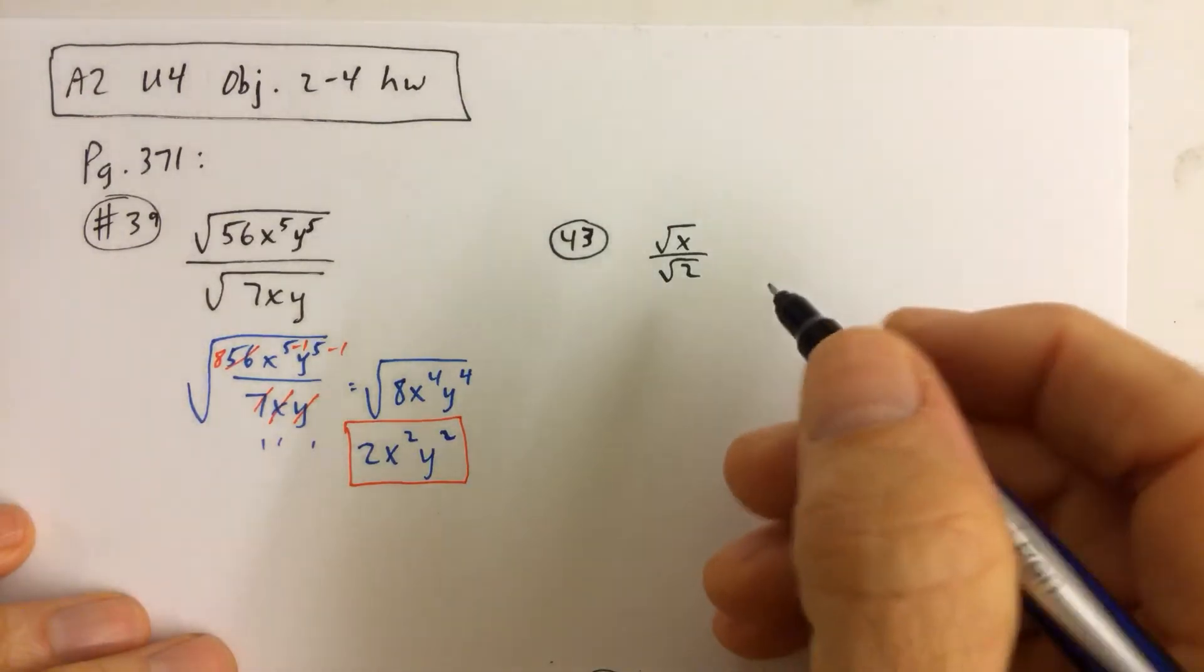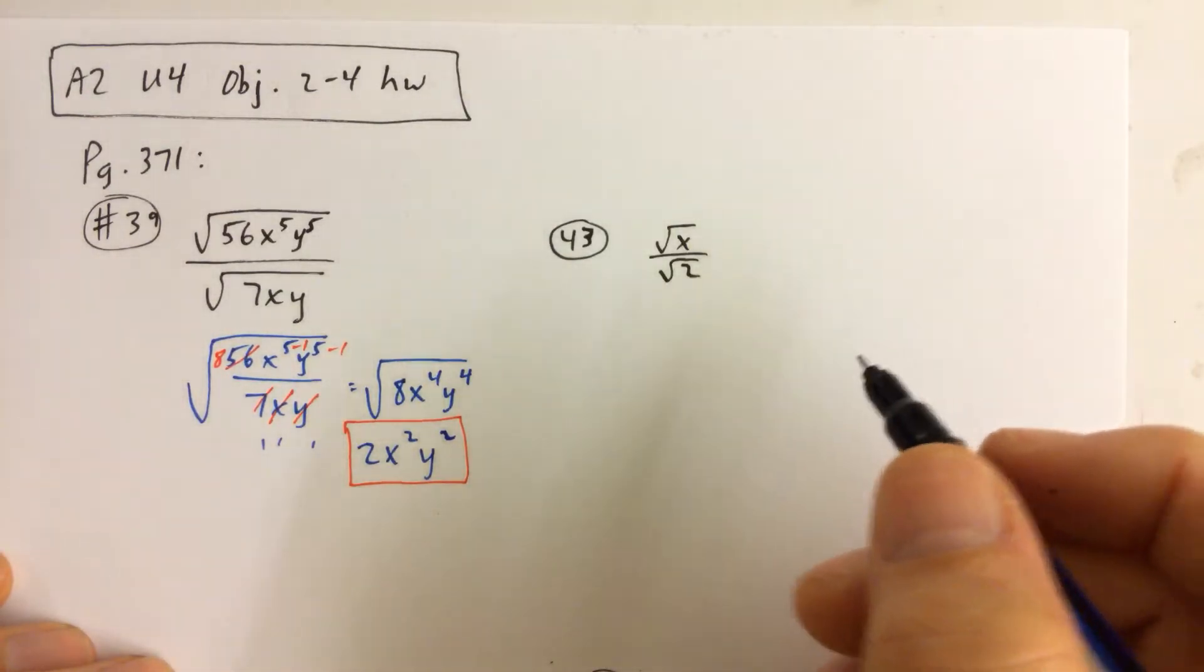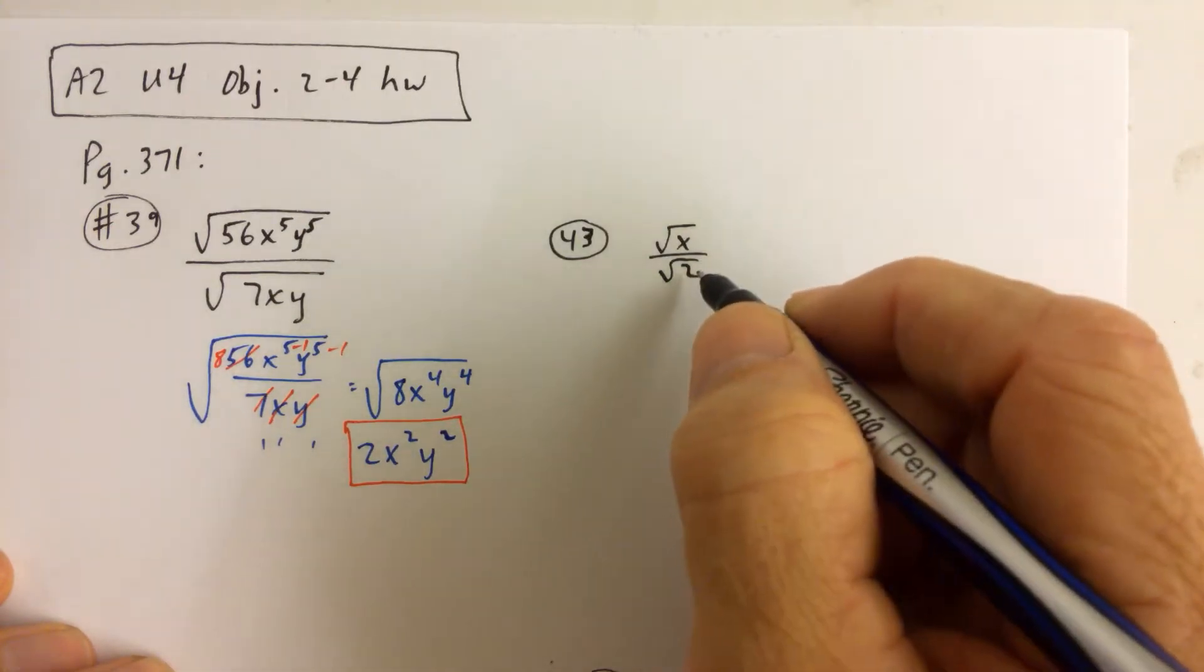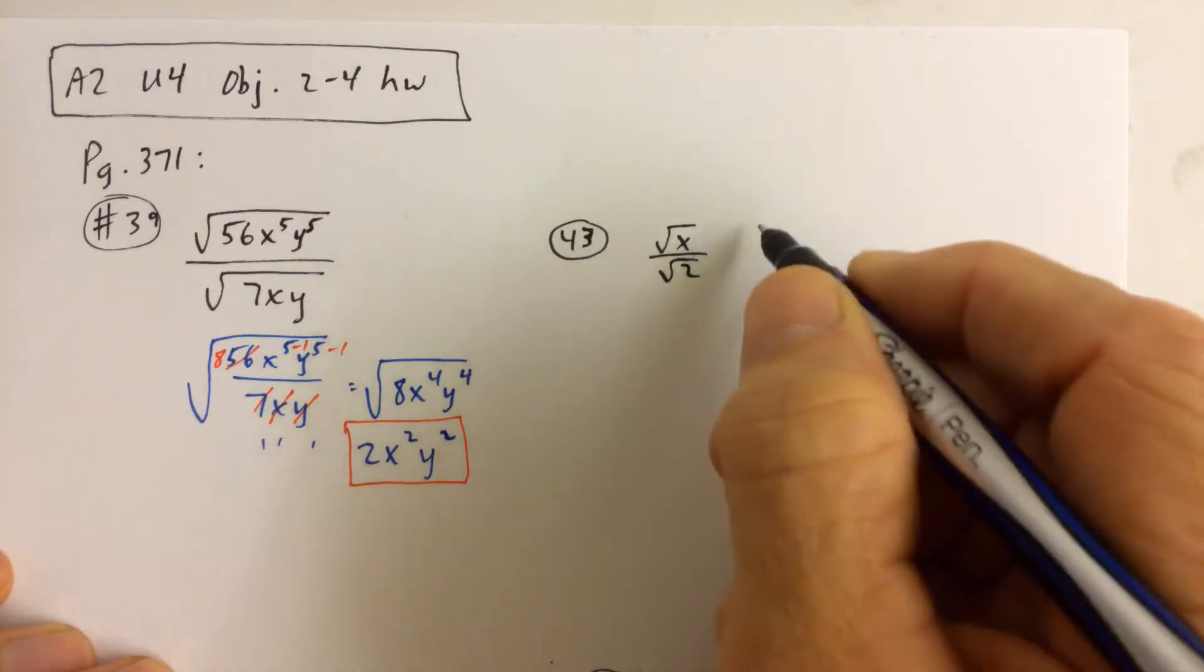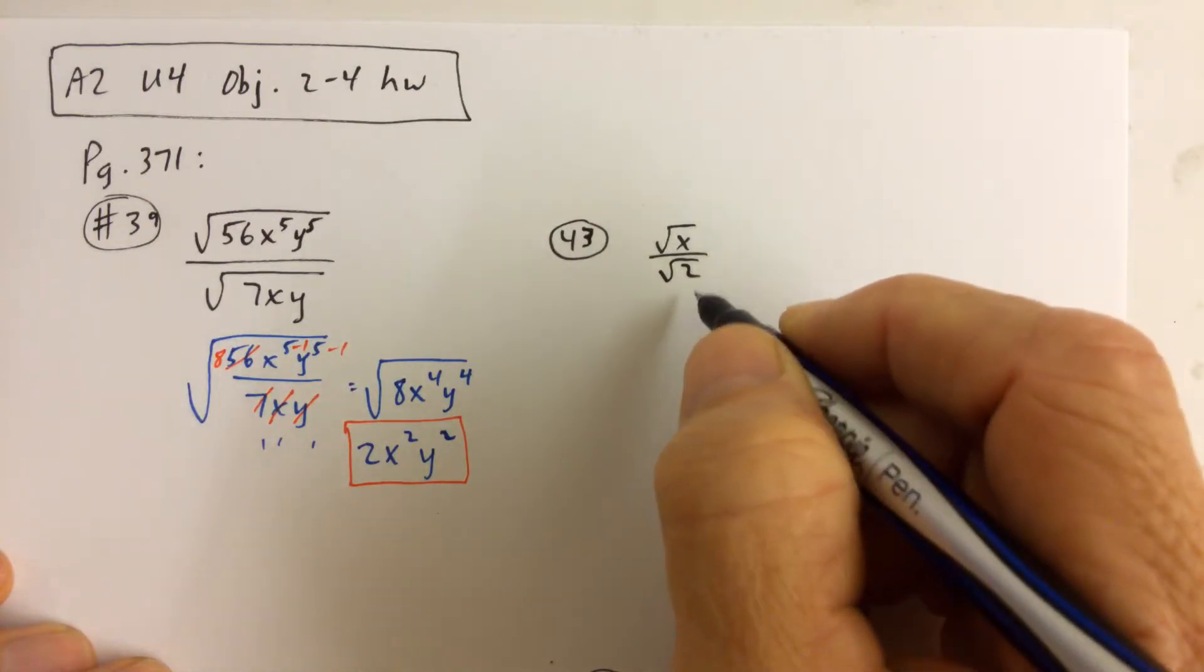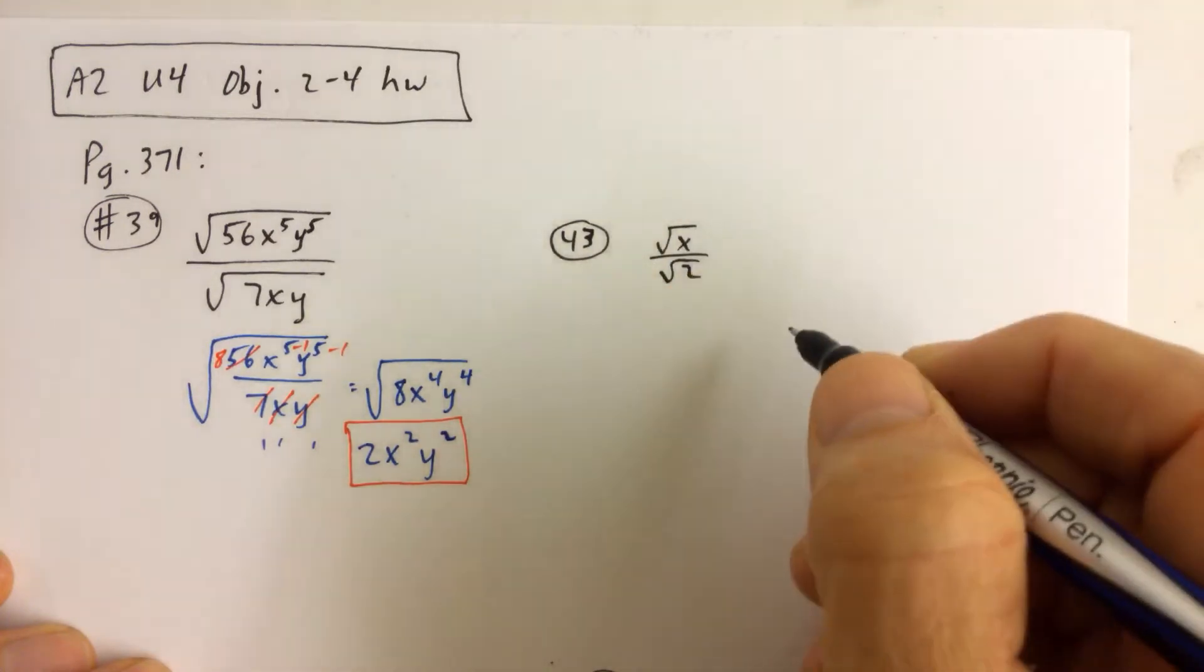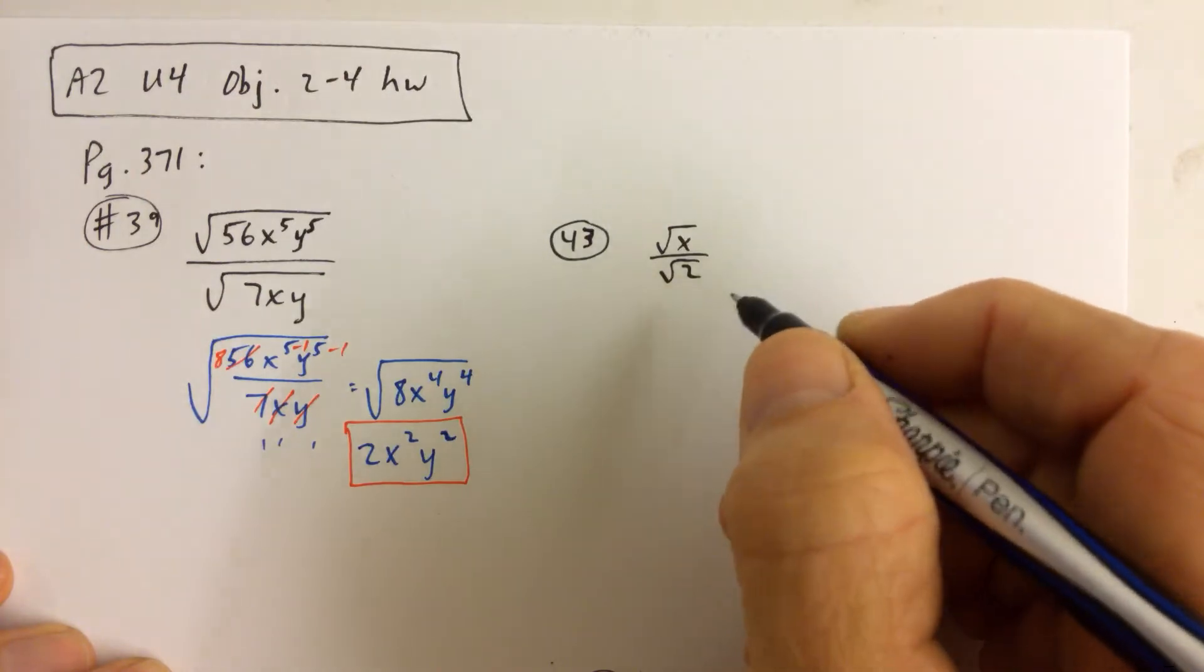And then what we see here in problem number 43 is we have no ability to cancel anything. If we were to write this whole fraction, the whole x over 2, underneath the one radical symbol, then we wouldn't be able to cancel anything.